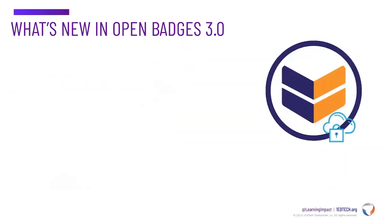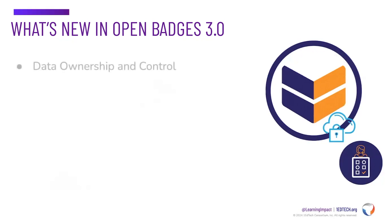The OpenBadges version 3 standard and its counterpart, the Comprehensive Learner Record standard version 2, take advantage of the latest technology, offering enhanced capabilities and features over previous versions. OpenBadges version 3 introduces decentralized identifiers, or DIDs, to the choice of identifiers, providing learners with greater ownership and control over their data.